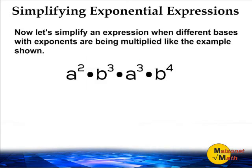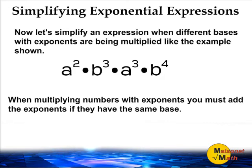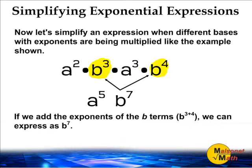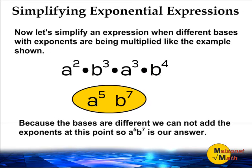Now let's simplify an expression when different bases with exponents are being multiplied. When multiplying numbers with exponents, you must add the exponents if they have the same base. We may only add the exponents of the a terms together and we may only add the exponents of the b terms together. When multiplying a to the second power by a to the third power and adding their exponents, we get a to the fifth power. When multiplying the b terms together — b to the third power times b to the fourth power — we get b to the seventh power. Because the bases are different, we cannot add the exponents at this point, so a to the fifth power times b to the seventh power is our answer.